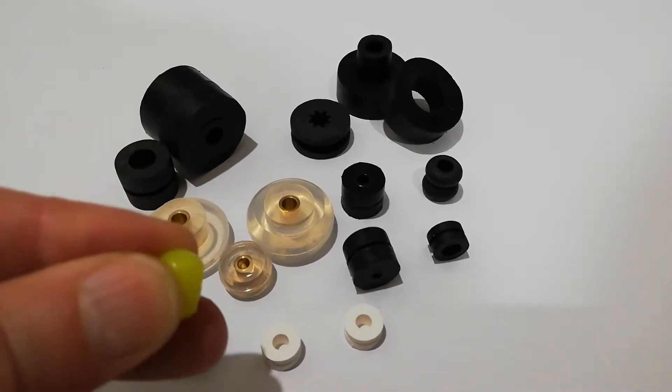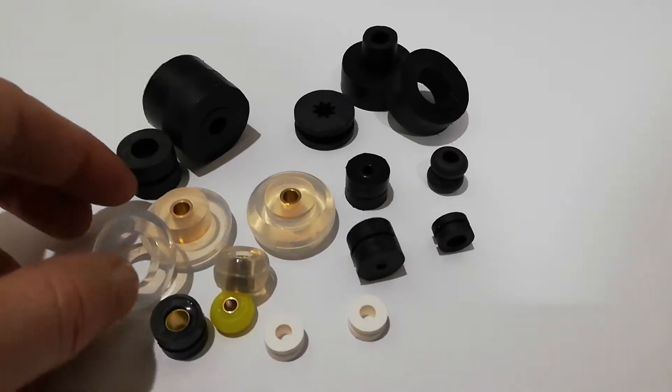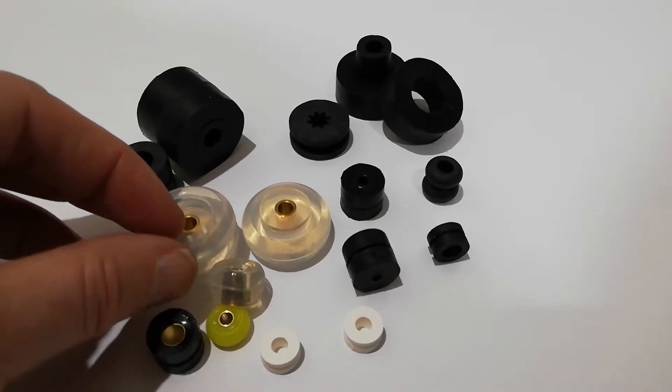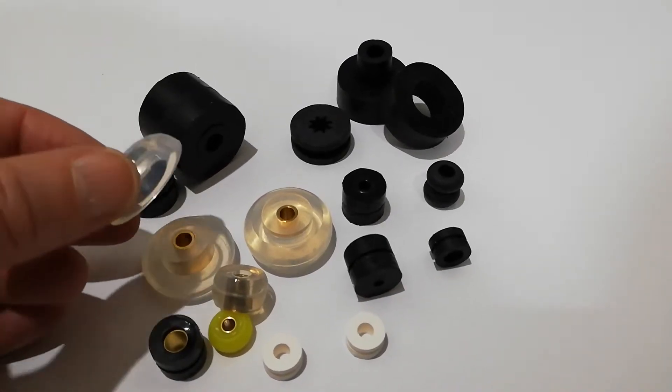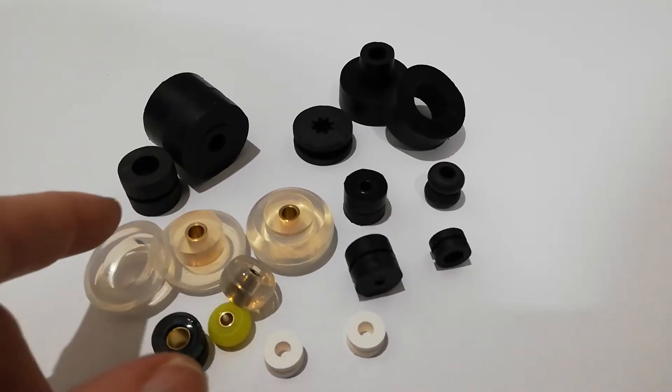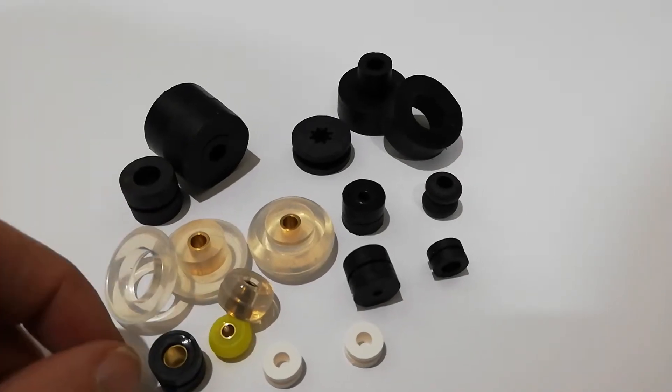These silicone gel grommets are two-piece and are designed to slot through the mounting hull and isolate the bolt. You sandwich either side of the mounting hull. They start in 11mm and go up to 25mm in diameter and they do shock and vibration damping.